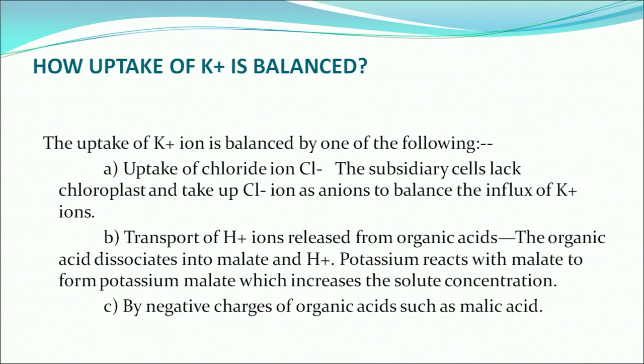Why is this potassium ion required? Potassium ions, chloride ions, and malate ions help in the increase and decrease of water potential inside the cell. This uptake of potassium ions is balanced by the uptake of chloride ions. Subsidiary cells lack chloroplasts and take up chloride ions as anions to balance the influx of potassium ions.